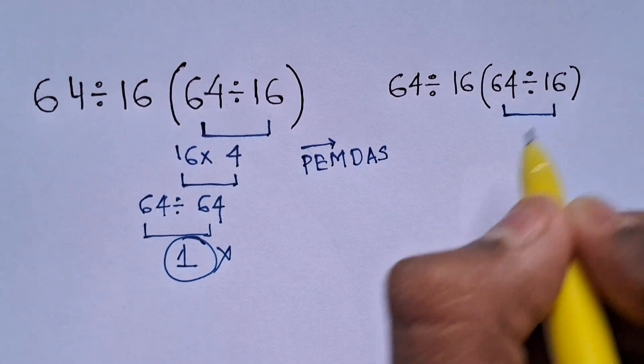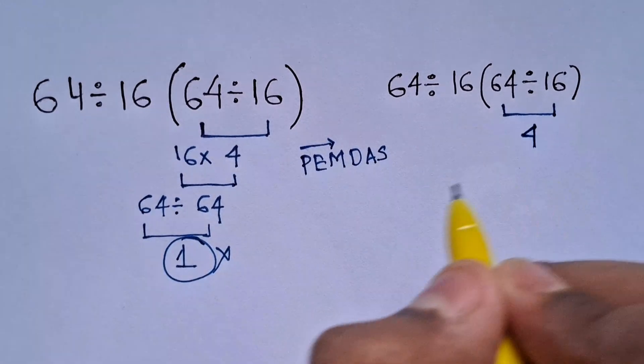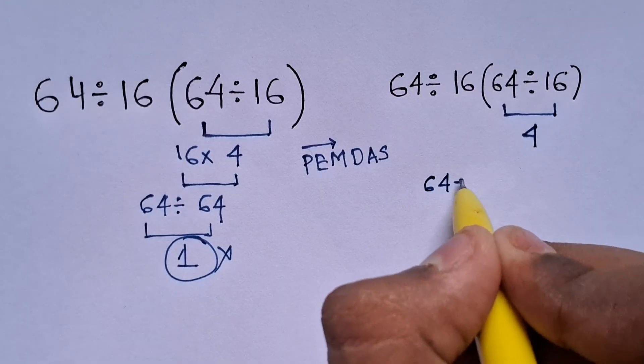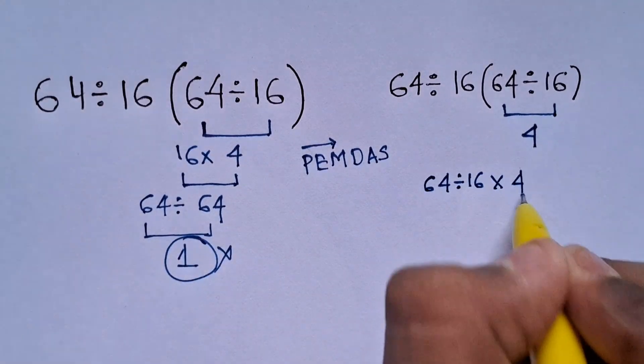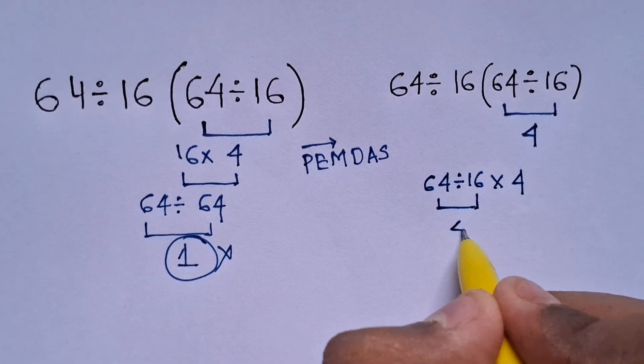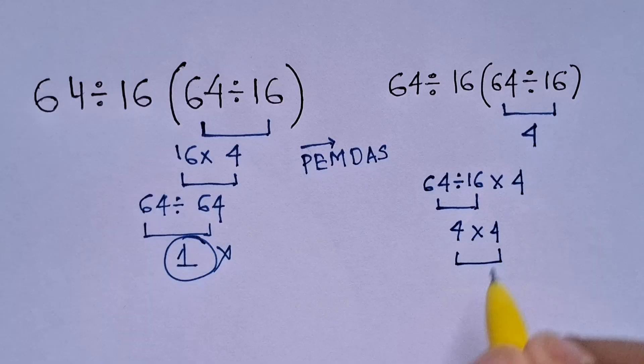So in our case, first parentheses or bracket: 64 divided by 16 equals 4. Now the expression becomes 64 divided by 16 times 4. We have to solve them from left to right, so 64 divided by 16 equals 4, times 4 equals 16.